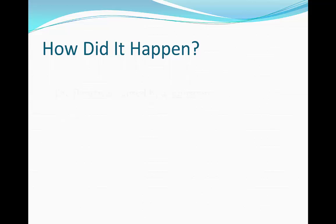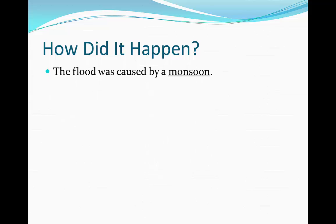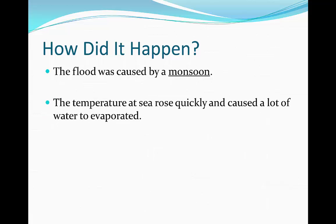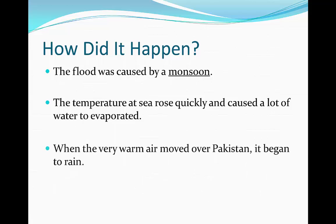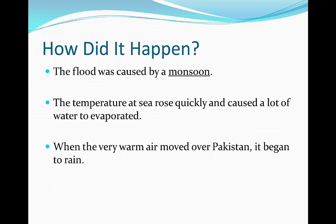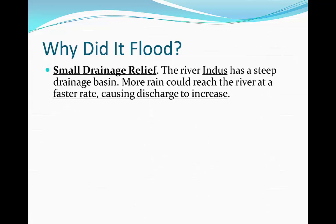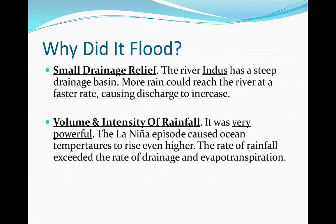So how did the flood actually happen? The flood was caused by a lot of rain from a monsoon. The temperature at sea rose very quickly and caused a lot of water to evaporate. This warm air then moved over Pakistan and it began to rain a lot. There was very small drainage relief. The river Indus has a steep drainage basin, so more rain could reach the river at a faster rate, hence causing the discharge to increase.